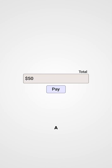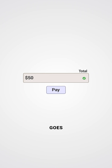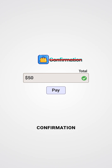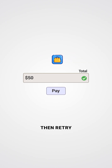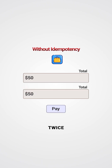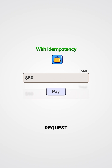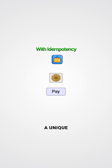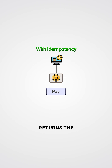The final part of handling atomic operations is handling retries with idempotency. Let's say a customer's payment goes through, but the client doesn't receive the confirmation due to a timeout or a network issue, and the client then retries the request. Without idempotency, you might charge the card twice for the same order. But with idempotency, each request includes a unique token. If the system sees that token again, it knows not to repeat the action — it just returns the original result.